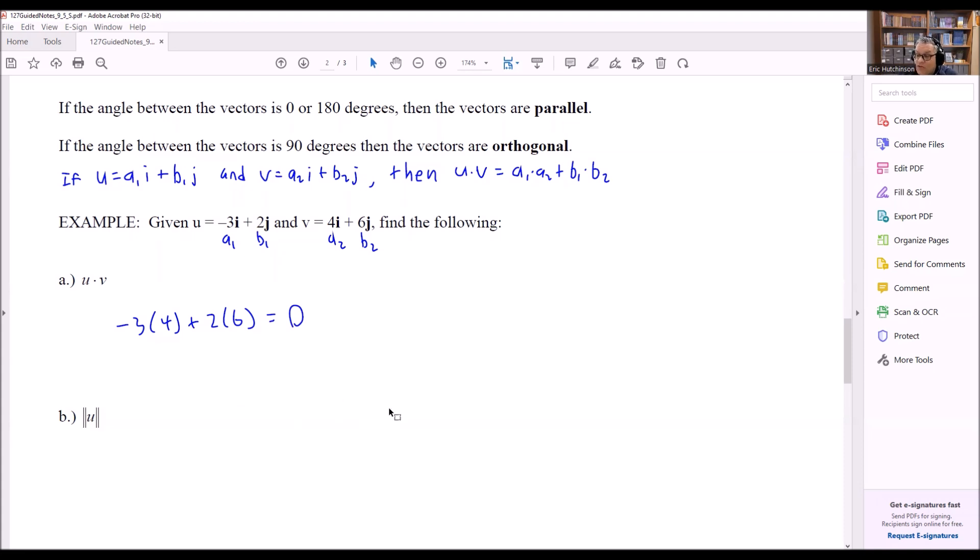Next one is we want to find the magnitude of u. Now, u is -3i + 2j. The formula for this is the one that has a square root. So it's the square root of a squared plus b squared of basically these two things squared inside: -3 squared plus 2 squared. So inside there, we get 9 plus 4. So that's going to be the square root of 13, and that's what we get for the magnitude of u.